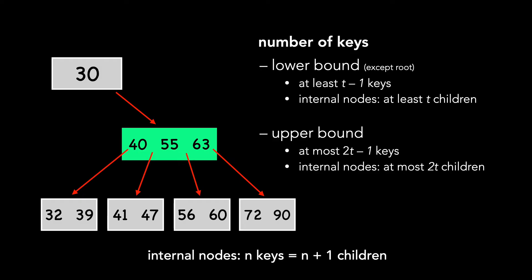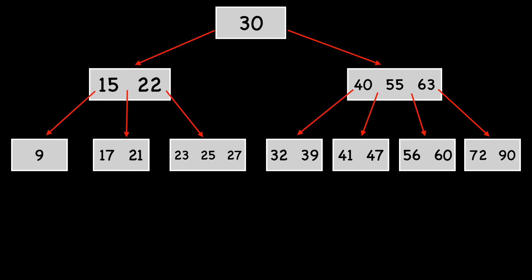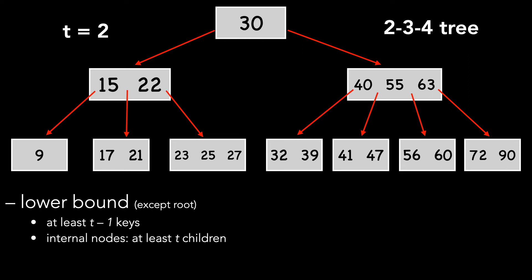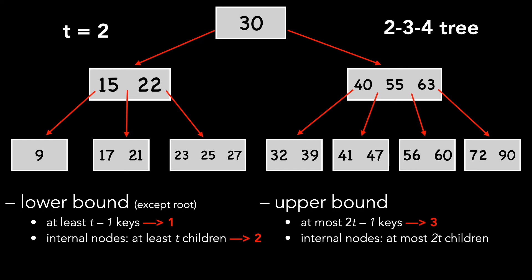Let's look at a concrete example. We'll use the simplest case where T is equal to 2. We call this a 2-3-4 tree. The lower bound on the number of keys is T minus 1, in this case 1. The node with a key of 9 is an example of this. The lower bound on the number of children when T equals 2 is also 2. For the upper bound, we can have at most 3 keys, shown by the node on the right. The maximum number of children is 4.